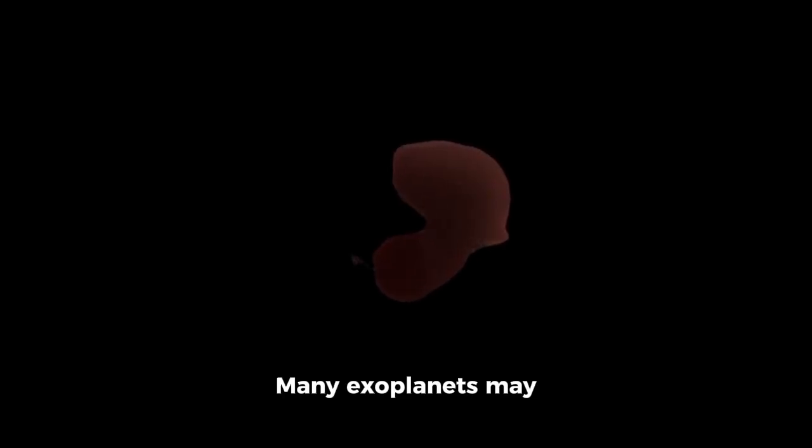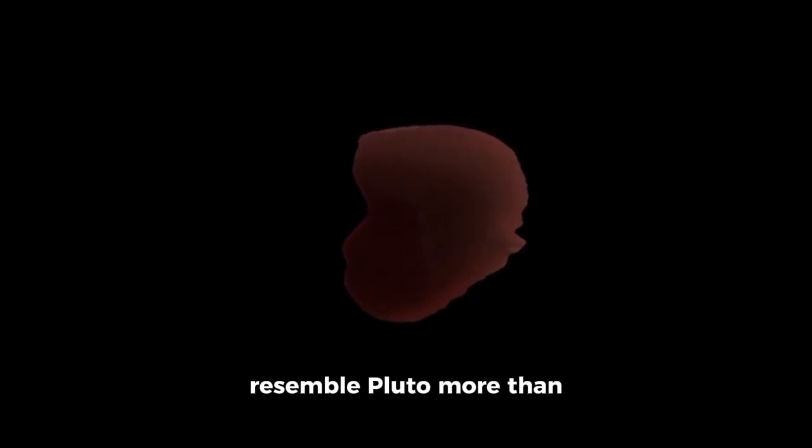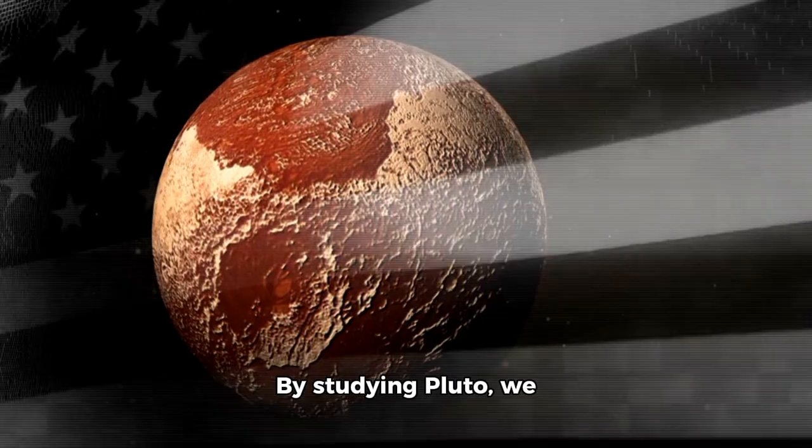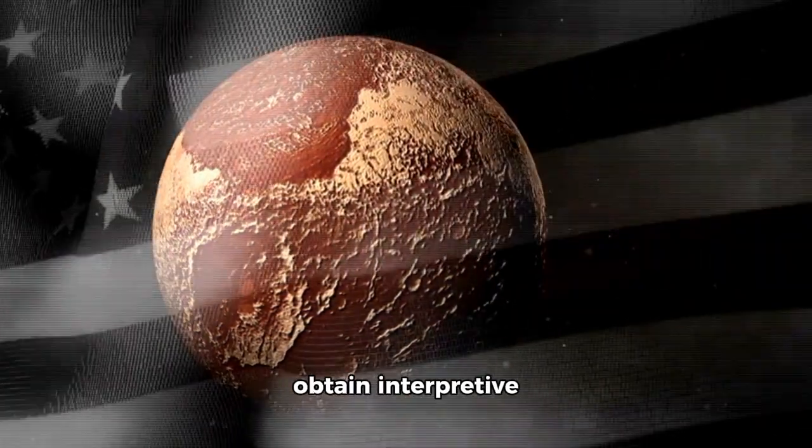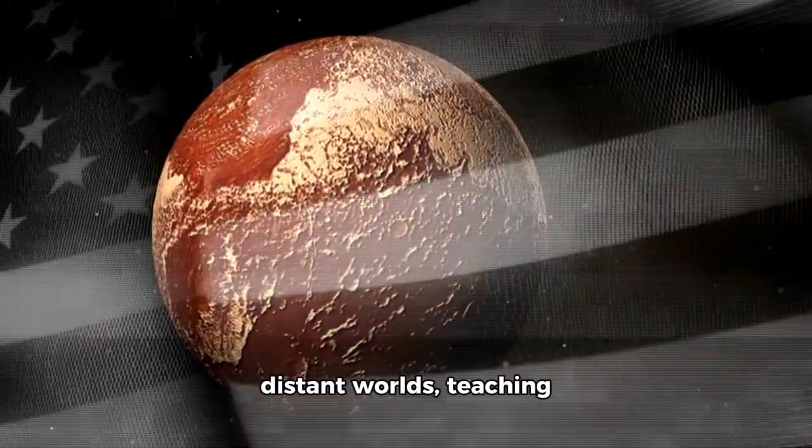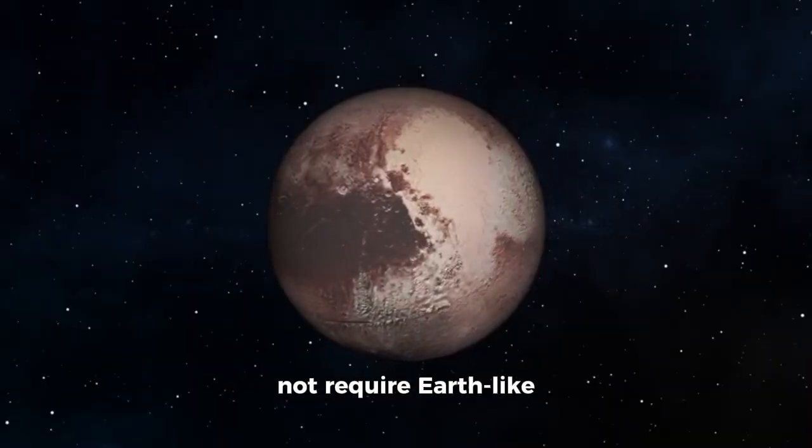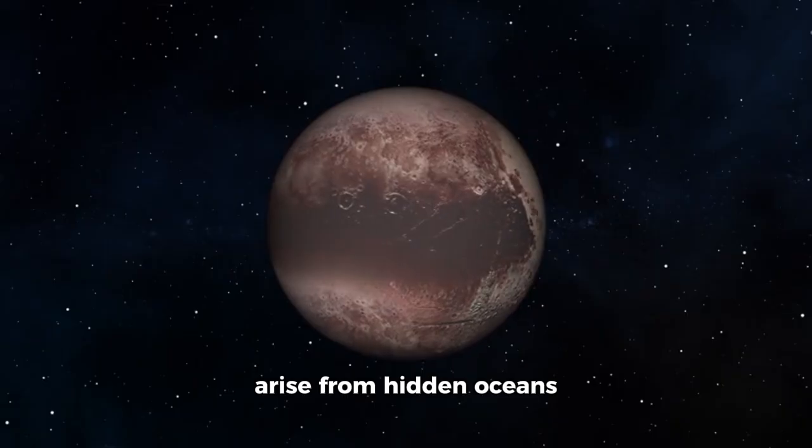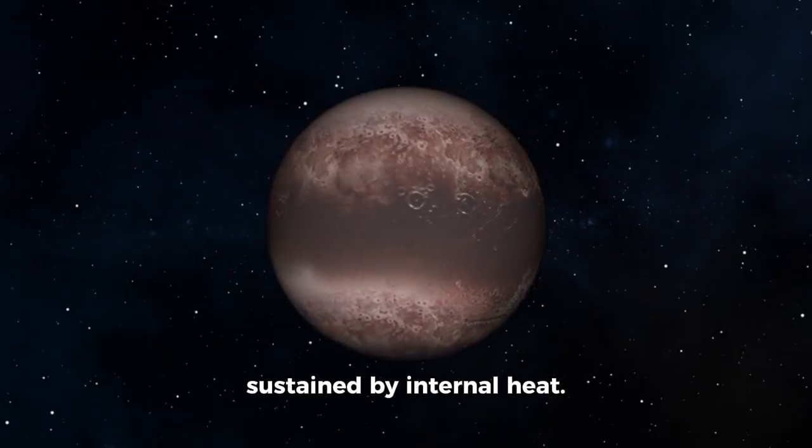Many exoplanets may resemble Pluto more than Earth, existing as frozen spheres far from their suns. By studying Pluto, we obtain interpretive templates for those distant worlds, teaching us that habitability may not require Earth-like conditions, but could arise from hidden oceans shielded beneath ice and sustained by internal heat.